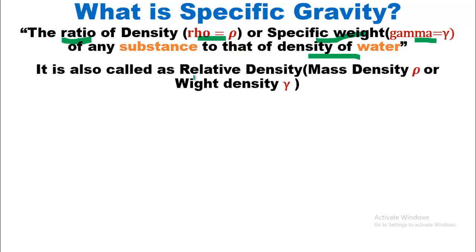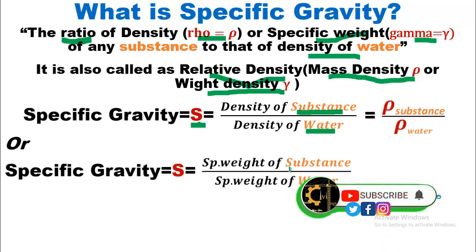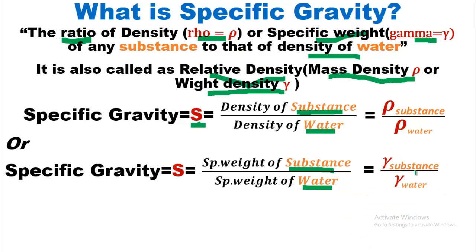It is also called relative density. It is important to mention that specific gravity and relative density are both the same. Relative density could be mass density, denoted by rho, or it could be weight density, denoted by gamma. Mathematically, specific gravity equals the specific weight of any substance divided by the specific weight of water, represented as gamma of any substance divided by gamma of water. It has no unit, as it is a ratio.